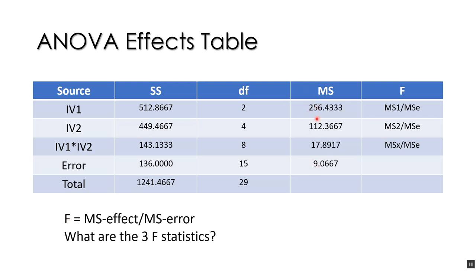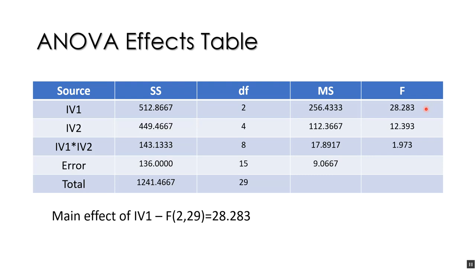To get the three F statistics: take the mean square — for example 256.4333 — divided by the mean square error, which is 9.0667. That gives 28.28. So the main effect for independent variable 1 would be F(2, 29) = 28.28, where 2 and 29 are the degrees of freedom numerator and denominator respectively.